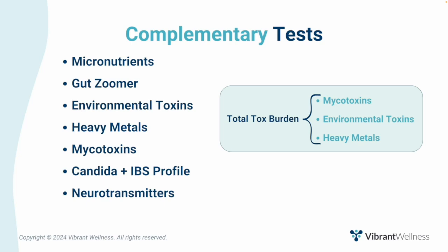Also, the gut zoomer — to take a deeper look at your patient's digestive capacity, the health of their microbiome, and to determine the extent of yeast and bacterial overgrowth. The gut zoomer is particularly helpful when markers in the microbial metabolites panel are elevated. Environmental toxins, heavy metals, and mycotoxins tests can investigate total toxic burden that can impact many enzymatic reactions affecting energy metabolism and mitochondrial function. Mycotoxins may be particularly important when mold metabolites are also elevated. When fungal markers are elevated, you may want to order the Candida plus IBS profile to assess for fungal antibodies. And finally, consider the neurotransmitters test to get a comprehensive understanding of neurotransmitter imbalances, particularly if neurotransmitter metabolites are out of range.